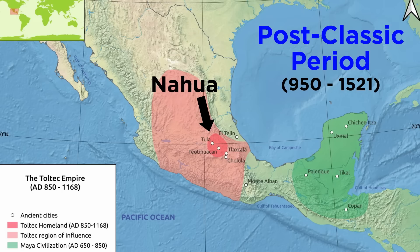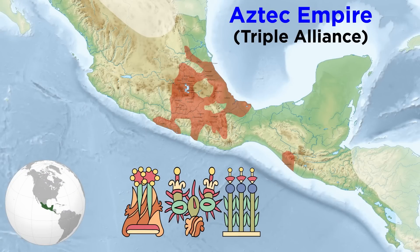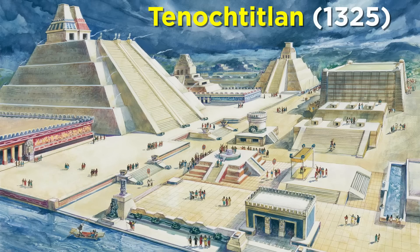The Post-Classic was also a period of migration of Nahuatl-speaking people from the north into central Mexico. After the collapse of the Toltecs, three of these groups of migrants formed the Triple Alliance, also known as the Aztec Empire. Their capital, Tenochtitlan, built in 1325, was a city unlike any other seen in Mesoamerica since Teotihuacan in its size and engineering.